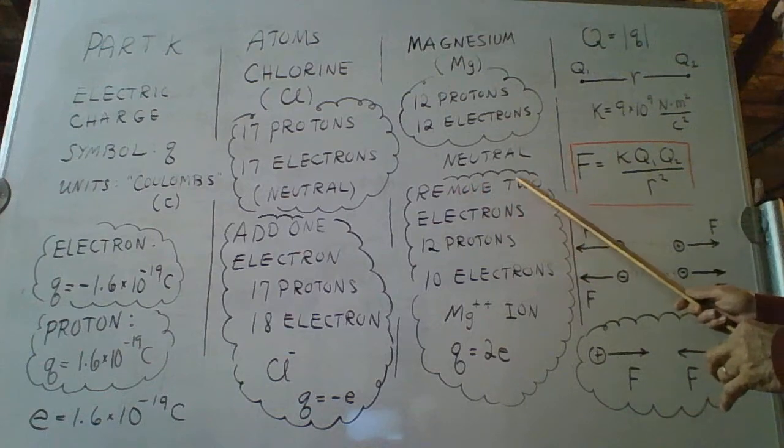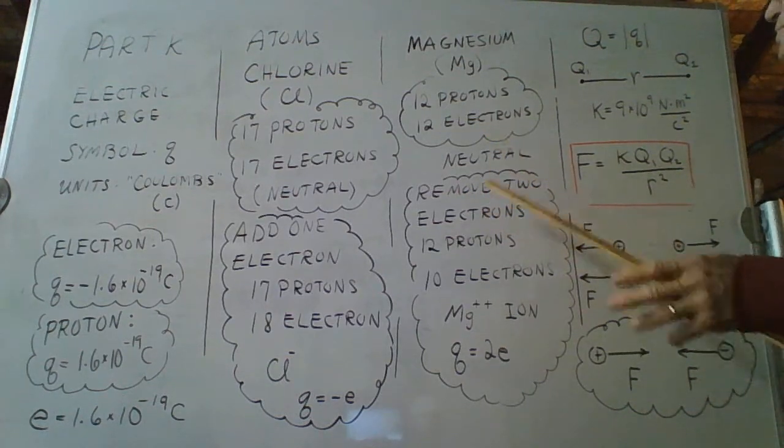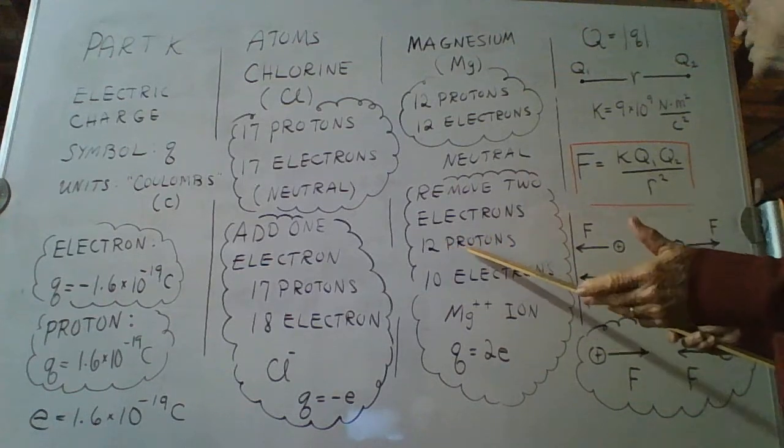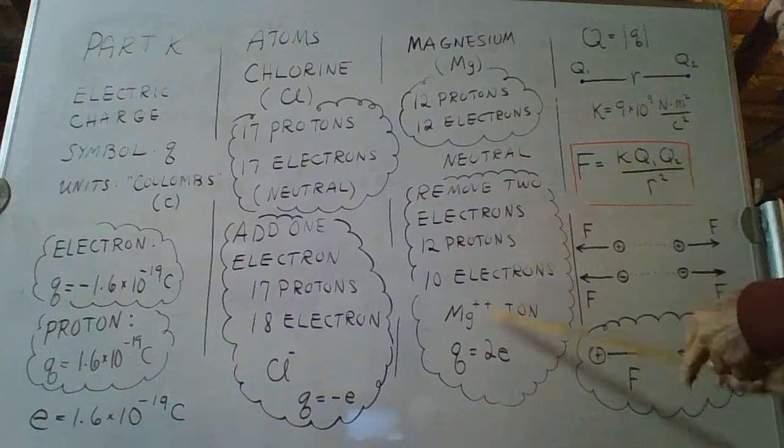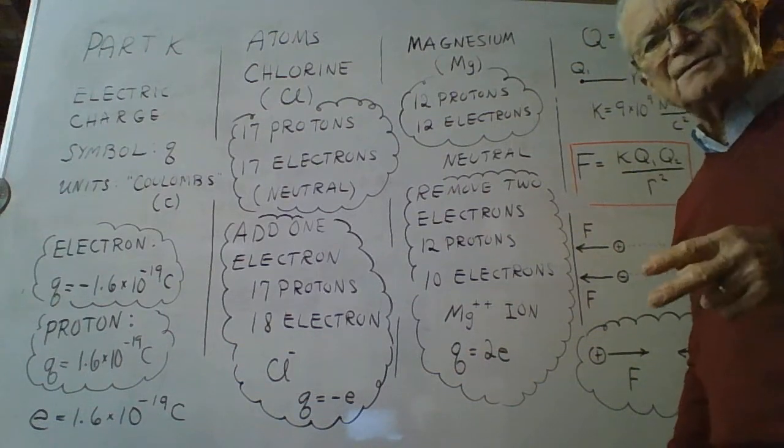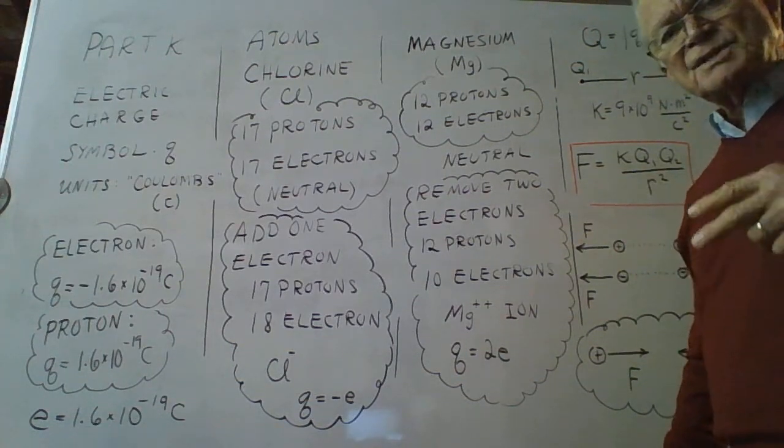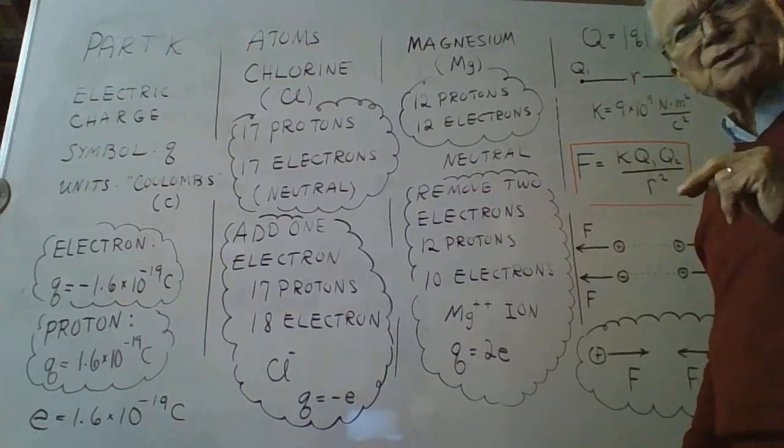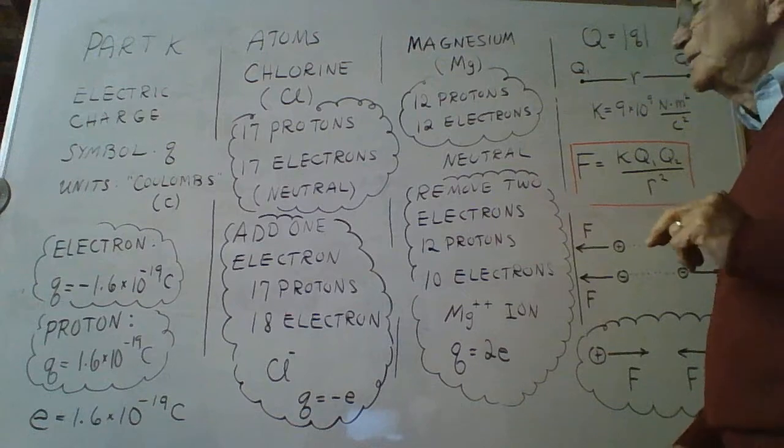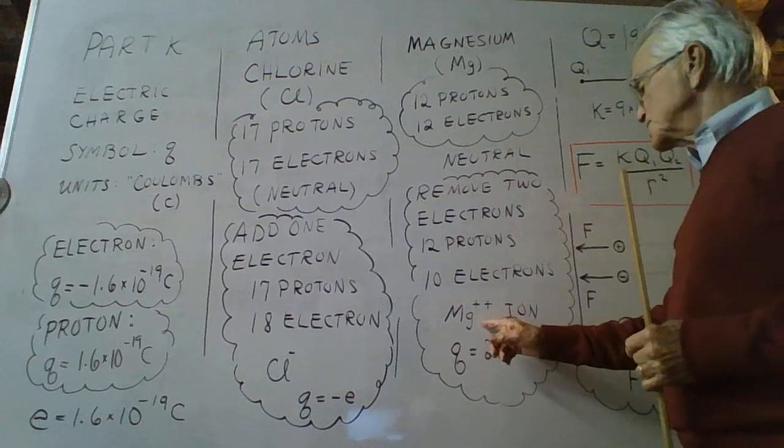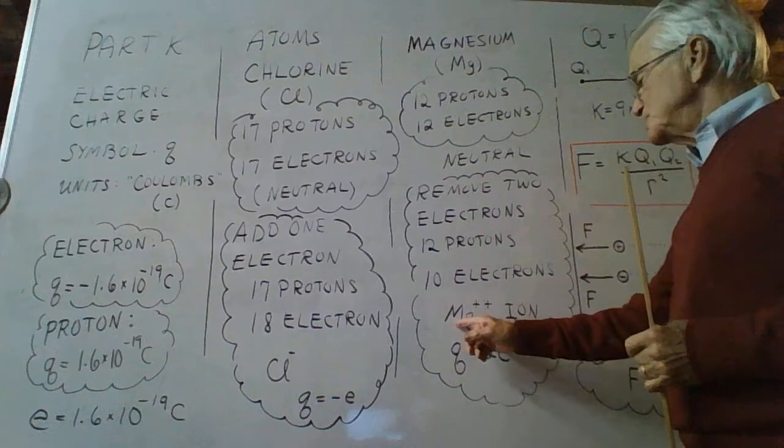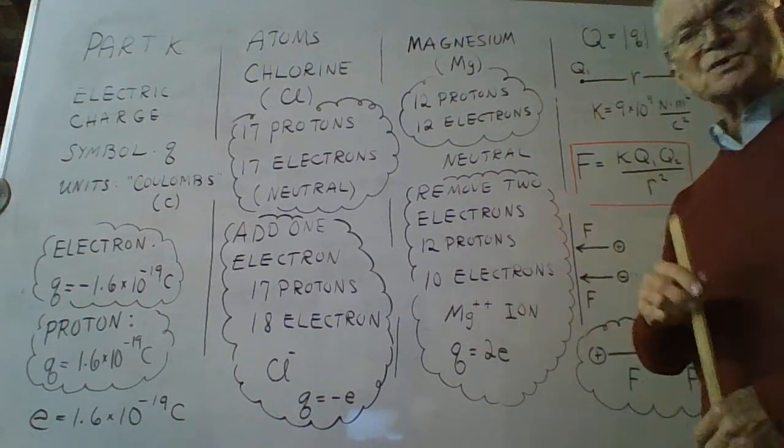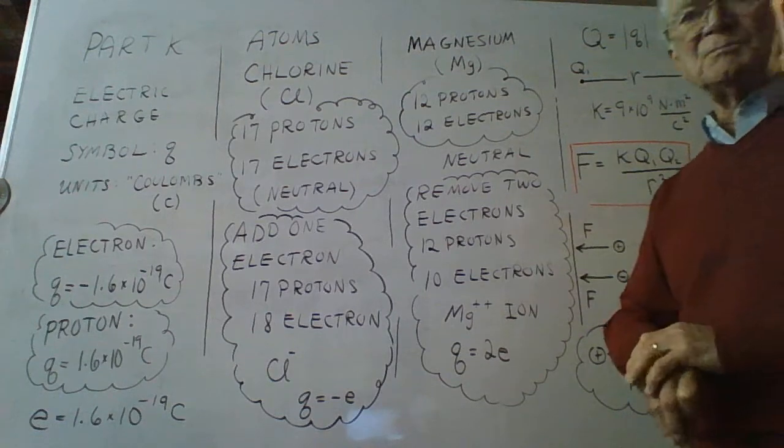Well, if we remove two electrons from the outermost orbit of magnesium, you'll still have your 12 protons, but now only 10 electrons. So you have two more protons than you have electrons. So there's an excess charge, a net charge we say, a total charge of two times what the proton charge is, or two times e. We symbolize that object this way. Mg is a symbol for magnesium. And put a double plus superscript there to create the magnesium ion.